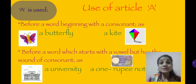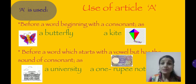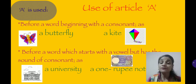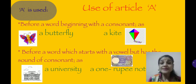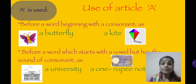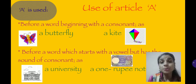Some words start with a vowel in spelling but are pronounced as a consonant — they produce the sound of a consonant. For example, 'university' — the spelling starts with vowel 'u', but the pronunciation is 'yu', which is a consonant sound. So before university, unit, unicorn, we use article 'a'. Another example is 'one rupee note' — 'one' starts with vowel 'o' in spelling, but the pronunciation is 'w', which is a consonant. So before 'one rupee note' or 'one-eyed man', we use article 'a'. Understood?